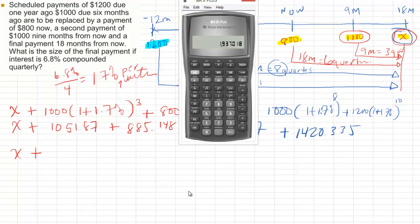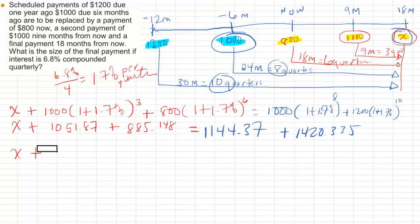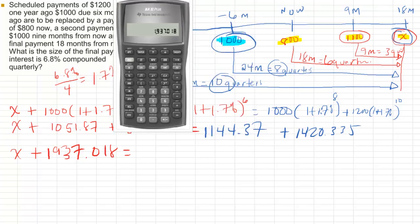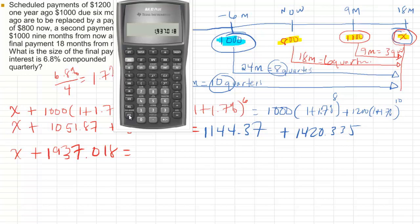1937.018 equals. Clear. Recall 3, that's that number, plus recall 4, that's that number, equals, and I'll store that somewhere where I will remember, store 8, 2564708.